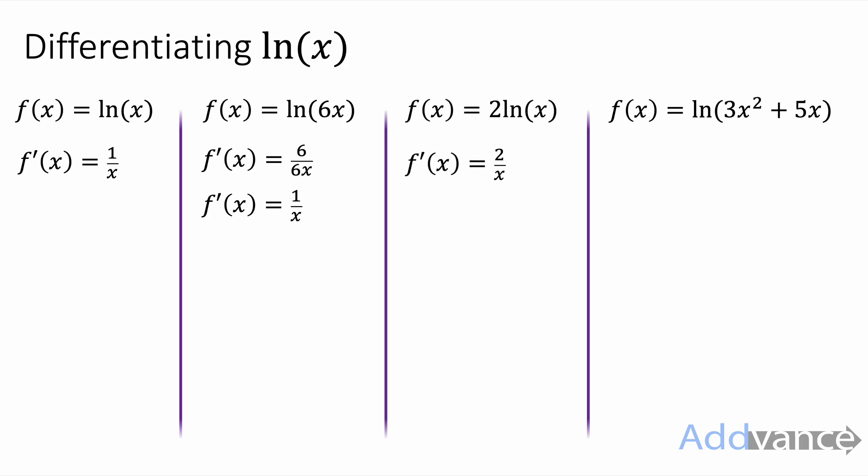This one is 2 ln of x. Well the 2 just multiplies the 1 over x to be 2 times 1 over x, which is 2 over x. All good so far.